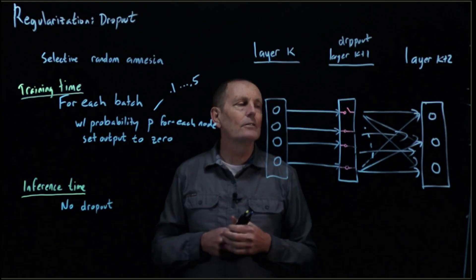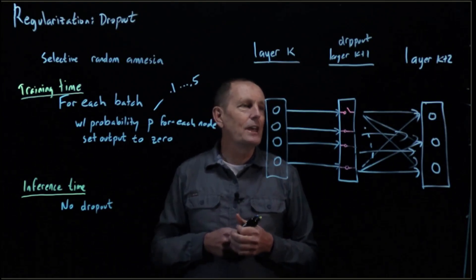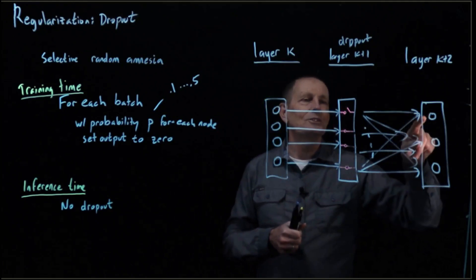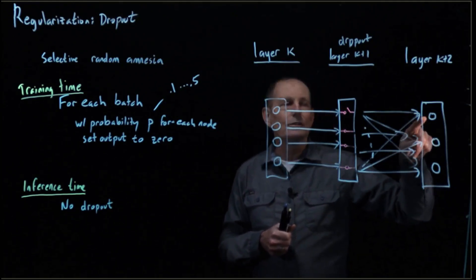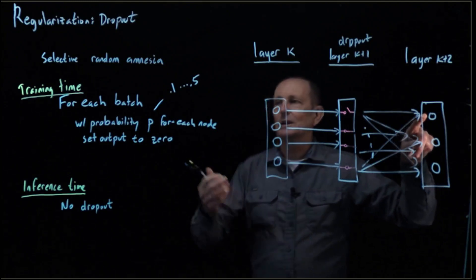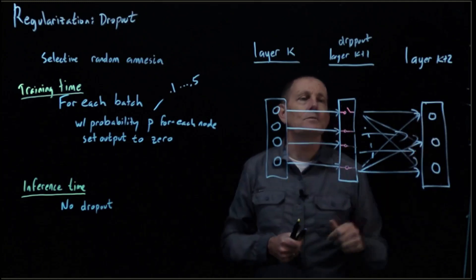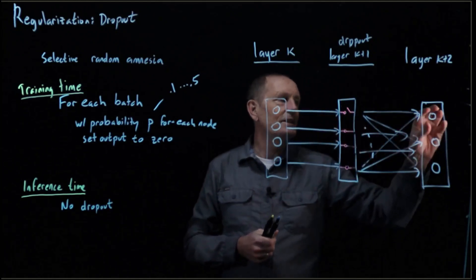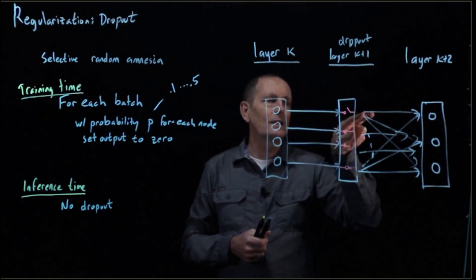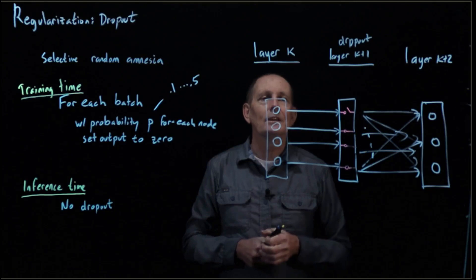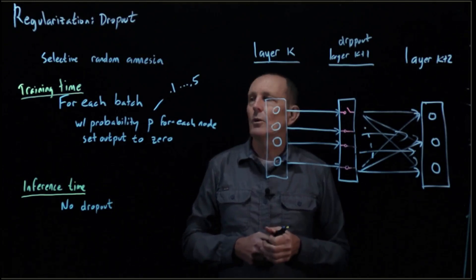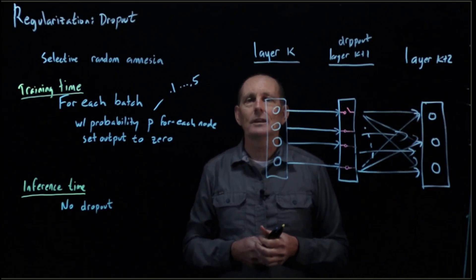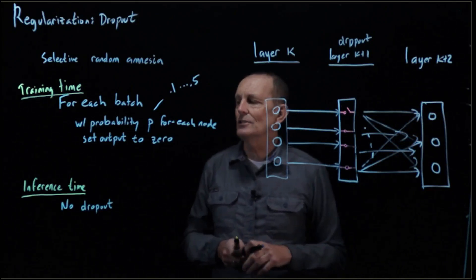The only thing we need to take care of is that at inference time, we have a difference from training time. At training time, the inputs into one of these nodes are going to be lower on average than they would otherwise be, because with probability p we cut off some of the inputs and set some of them to zero. So when we turn off dropout, these values are going to be higher than they would otherwise be, because all of a sudden we're getting non-zero for every input from the previous layer.